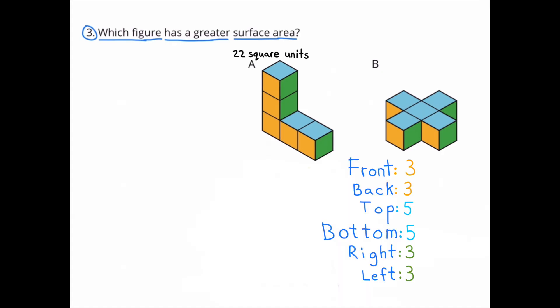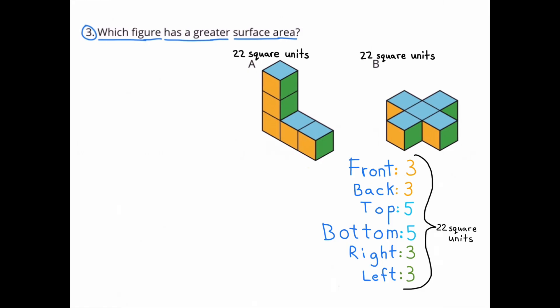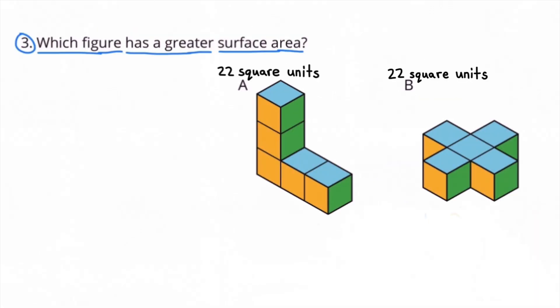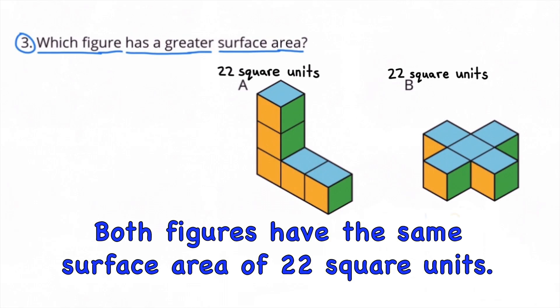The front and back of Figure B have a surface area each of 3 square units. The top and the bottom of Figure B each have a surface area of 5 square units. And the right side and the left side of Figure B each have a surface area of 3 square units. All combined, Figure B also has a surface area of 22 square units. Both figures have the same surface area of 22 square units.